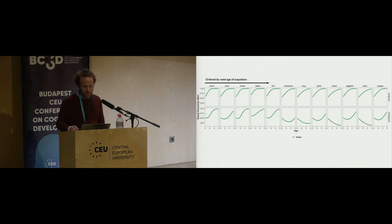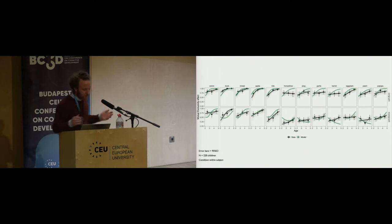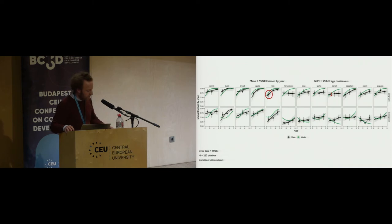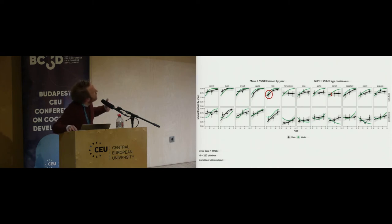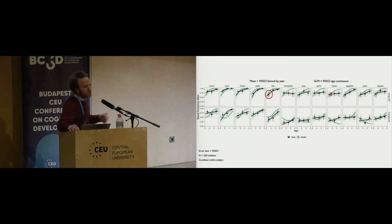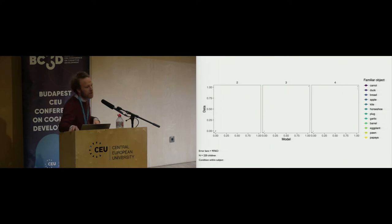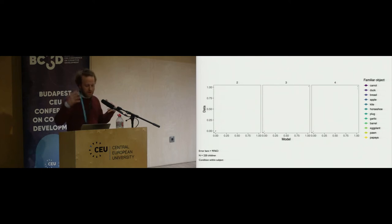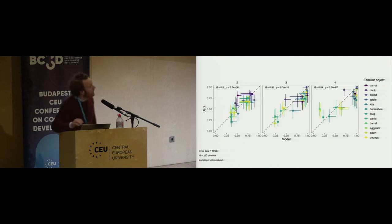How do these model predictions compare to actual data? We show data binned by year with 95% confidence intervals, plus a continuous fitted curve collected across the full age range. Visually, the green line and the black line are fairly close. To evaluate more formally, we looked at correlations between model predictions and data, binning both by year. There is a fairly strong correlation across different ages, though slightly less so for older kids, mainly because our model makes very extreme predictions for the oldest children.